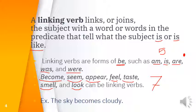Here is an example: 'The sky becomes cloudy.' The verb is 'becomes.' To determine whether it is a linking or action verb, substitute one of the basic five forms of 'be.' Can I say 'The sky is cloudy'? Yes — it makes sense and has nearly the same meaning, so 'becomes' here is a linking verb.